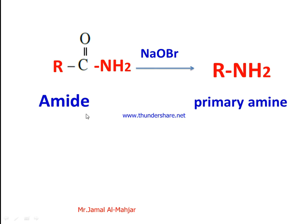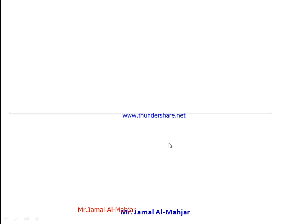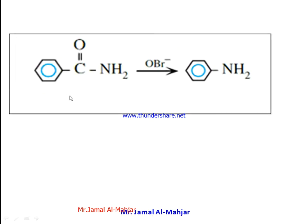This is the unsubstituted amide: R-C(=O)-NH₂. You can remove the C=O group using sodium hypobromite or any type of hypobromite, and you will get the primary amine. For example, benzamide: if you remove C=O from benzamide using hypobromite, you will get aniline.